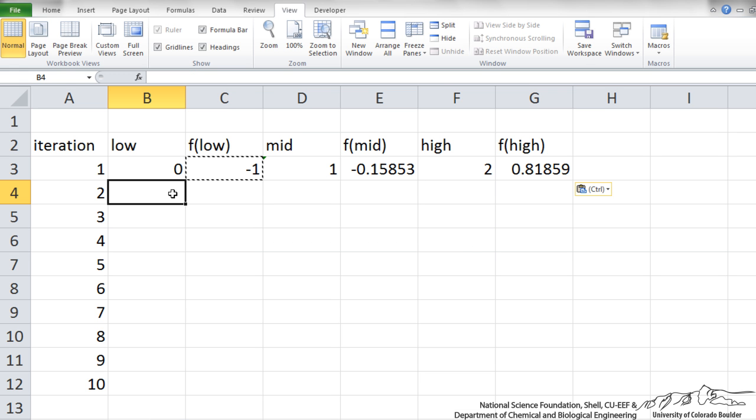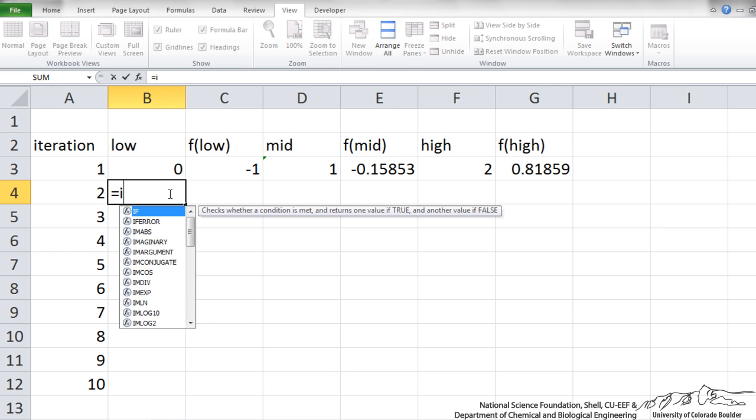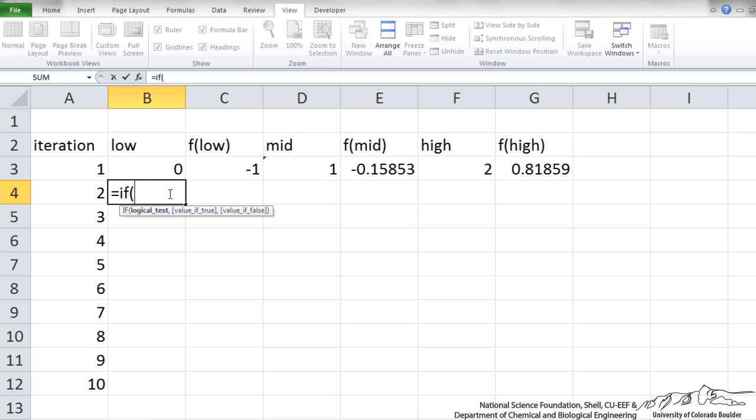Now this is the tricky part because we want to set it up so we do not have to do this manually. We know that the zero has to lie somewhere between 1 and 2 because we see a sign change of that function. But what I want to do is set it up so it can do this automatically. Excel has a nice if logical function. So I am going to say if. I am going to ask the question if the function at the low left bound multiplied by the function at the middle.